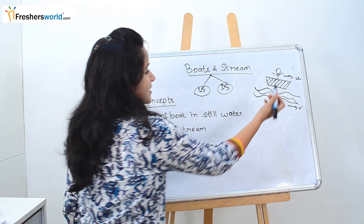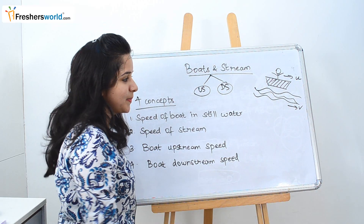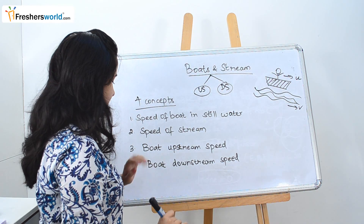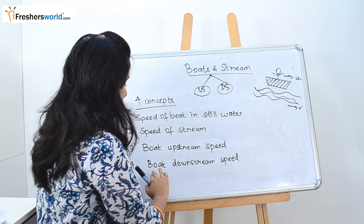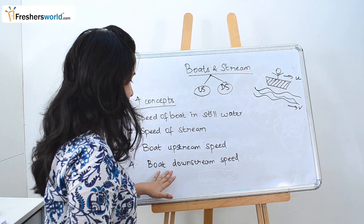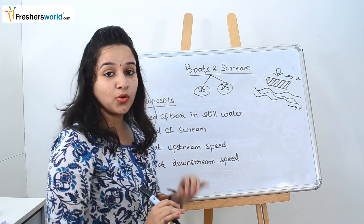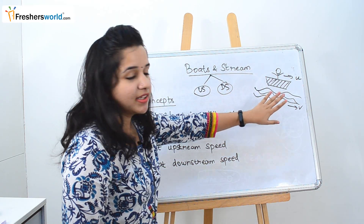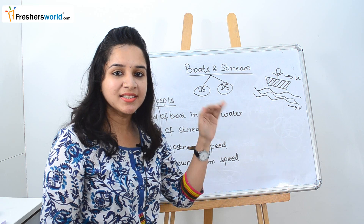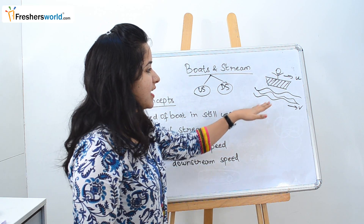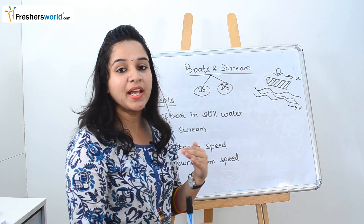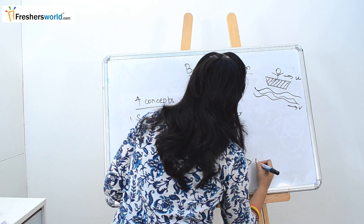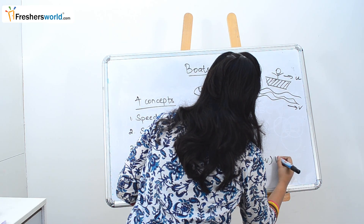The boat is going at U kilometers per hour and the river is going at V kilometers per hour. For boat downstream speed: as downstream means your boat as well as the river are going in the same direction, your speed and the river's speed will be added together. So it is nothing but U plus V kilometers per hour.